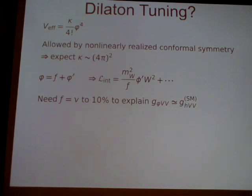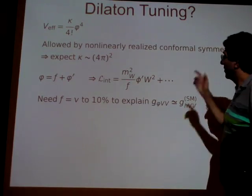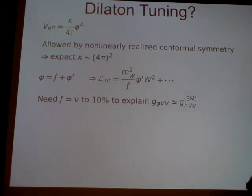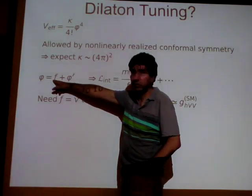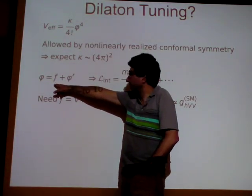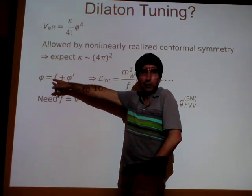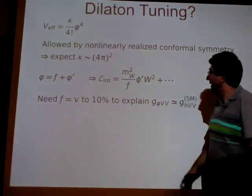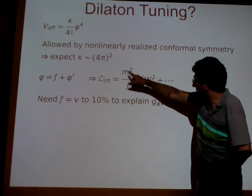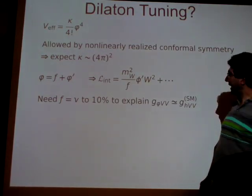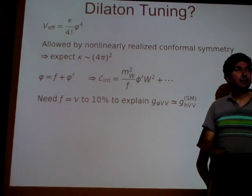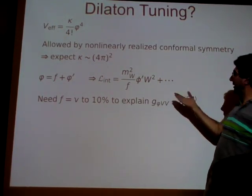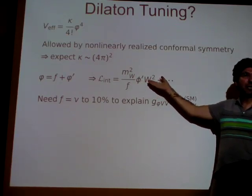We expect this quartic to be strong. But that's bad, because if we really want φ to couple like a Higgs, we have to expand around its VEV F — and F is not V in general, since this dilaton has nothing to do with electroweak symmetry breaking. The linear coupling to W's goes like m_W² / F, but in the standard model it would go like m_W² / V, and this coupling has been measured. This is the most accurately measured Higgs coupling. So we need F to equal V to order 10% to explain the observed Higgs couplings.